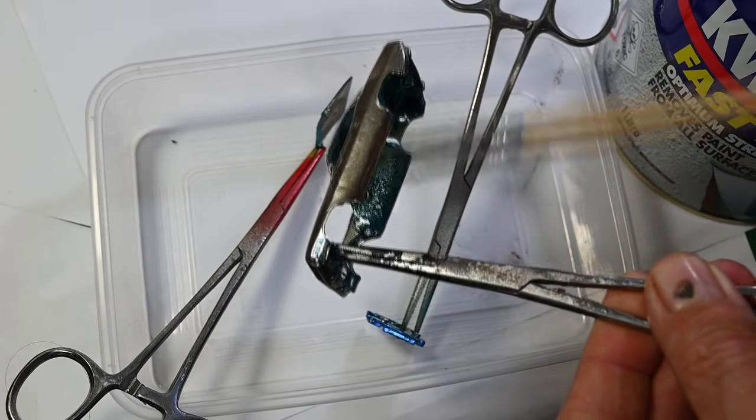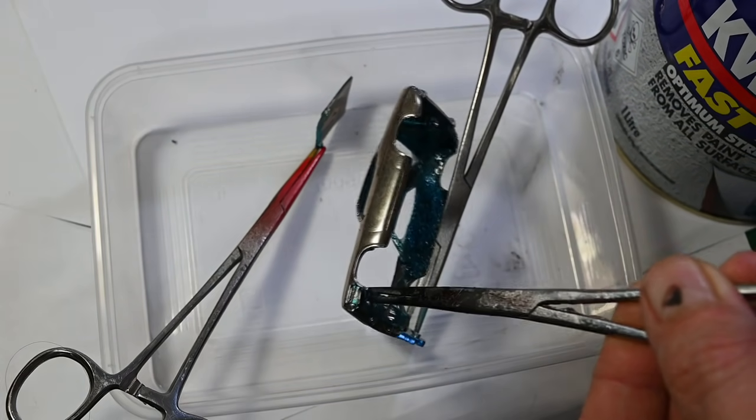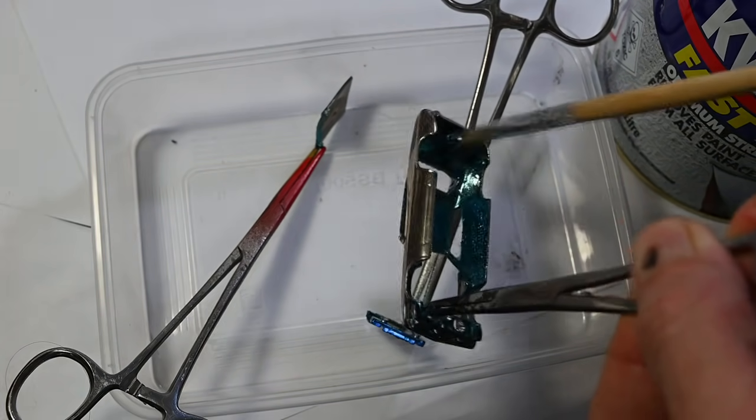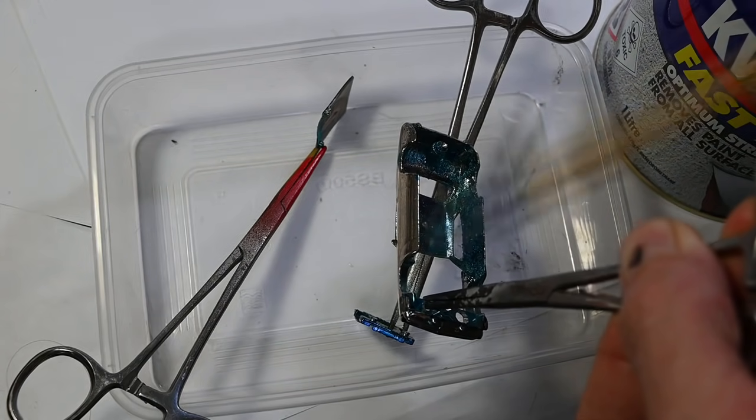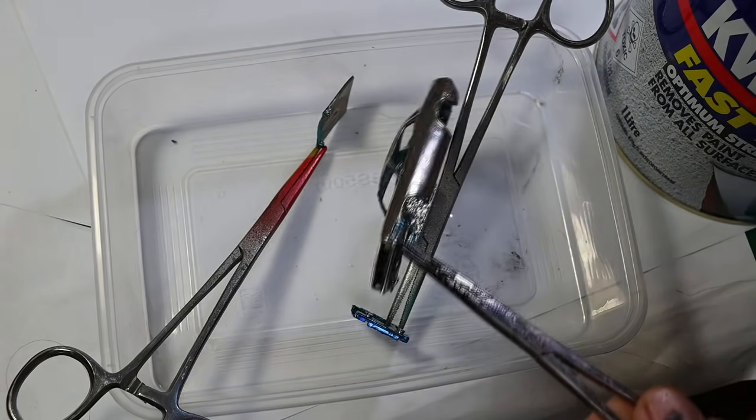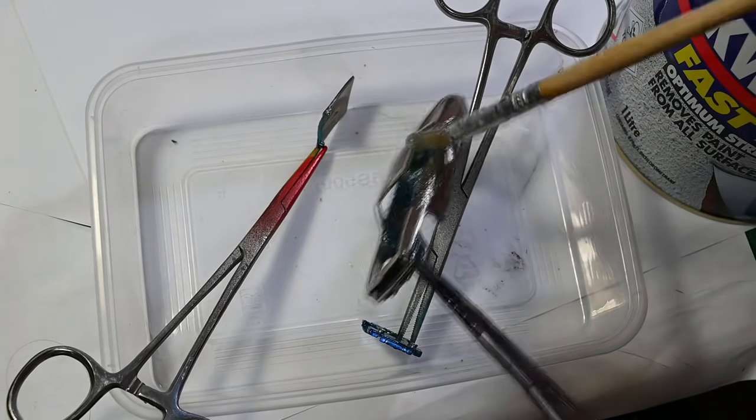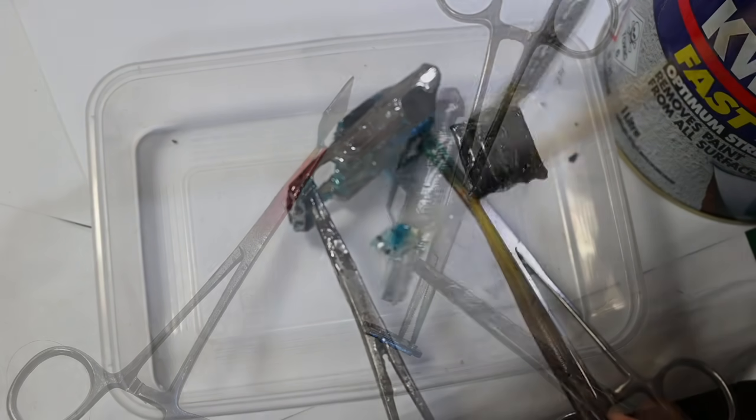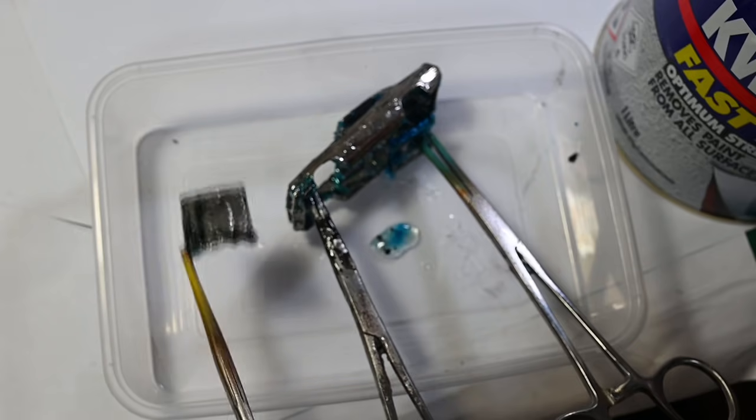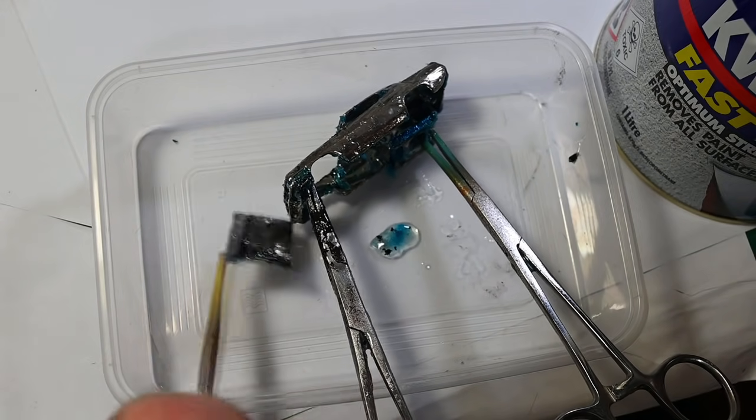So next I'll use some paint stripper to strip what's left of the paint off of the castings. Nearly all the paint's gone and there's not much scratches or anything on it, so I really don't know what's going on there.